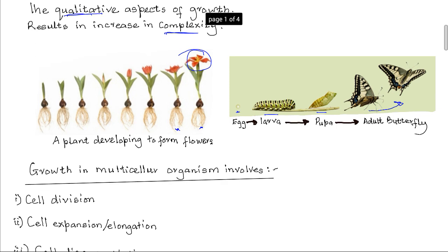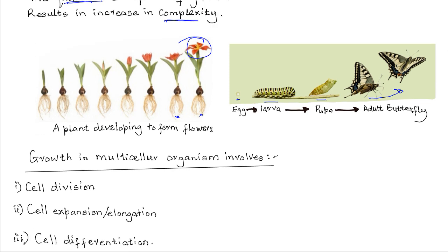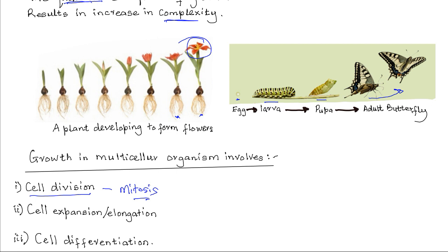In multicellular organisms, growth occurs in three phases. The first is cell division — the increase in the number of cells through mitosis, brought about by repeated mitotic cell division. Then there is cell expansion or elongation: the increase in the size of the cell due to absorption and assimilation of materials. Cell elongation is more pronounced in plant cells than in animal cells, because in plant cells there is formation of sub-vacuoles that greatly increase the size of the individual cells.